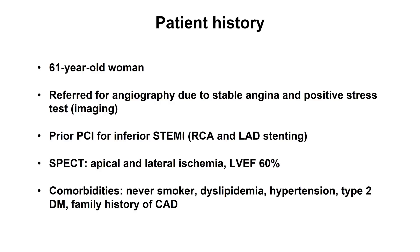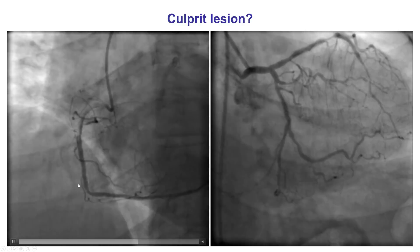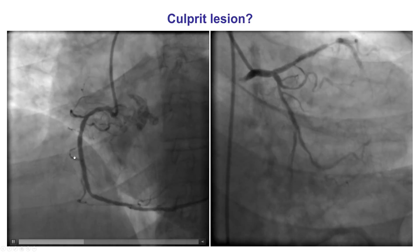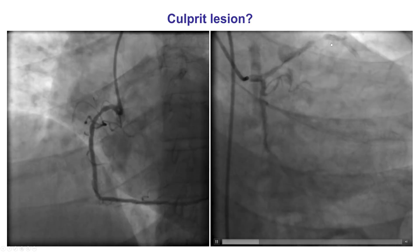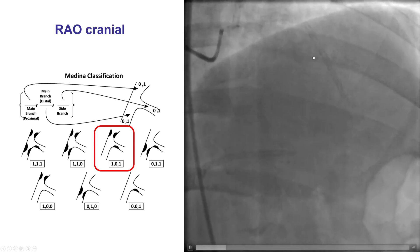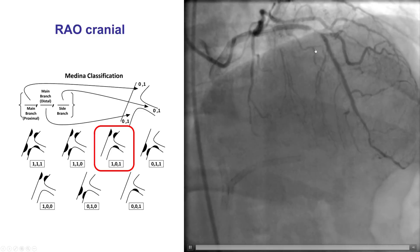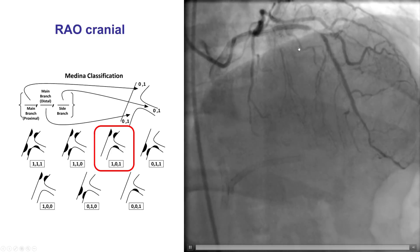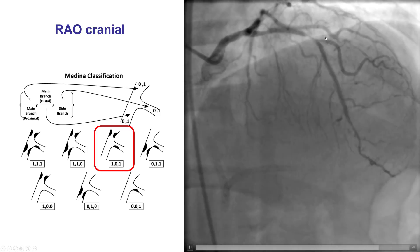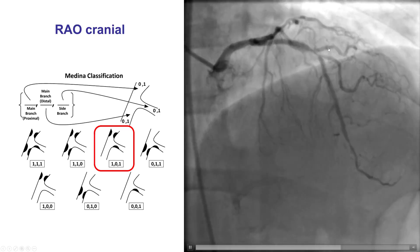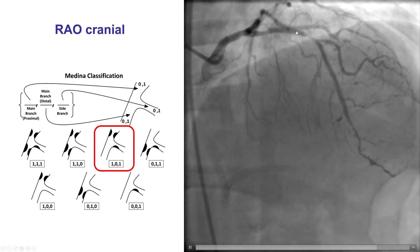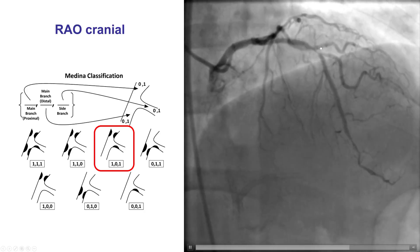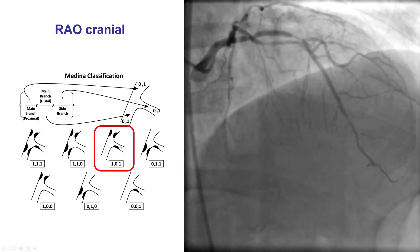The patient was a woman who presented with stable angina and a positive stress test for apical and lateral ischemia. She had previous stents in the right coronary artery and the LAD. Diagnostic angiography demonstrated patent stents in the right coronary artery; however, the LAD had a severe lesion in the mid-segment. The aero-cranial view shows the LAD lesion was severe, corresponding to a Medina 1-0-1 bifurcation — disease in the main vessel proximal to the side branch takeoff, no disease distal to the takeoff, and some disease in the ostium of the diagonal.